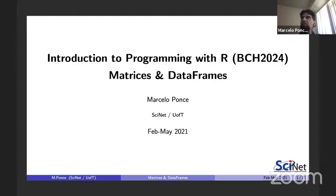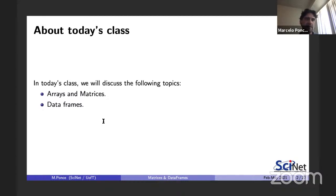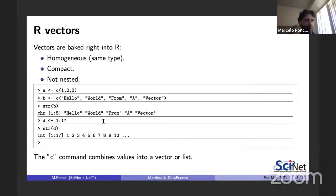I hope you can see the slides and my video feed. My connection dropped earlier so hopefully that won't happen again. For today, as mentioned, we're going to talk about arrays and matrices, and then data frames, since there are some interesting features we haven't discussed yet. This is a continuation of vectors — if you remember, vectors are very efficient because they are homogeneous, meaning all elements in the vector are of the same type.